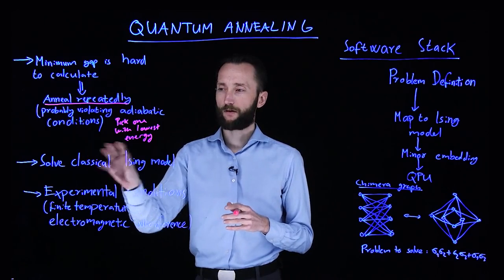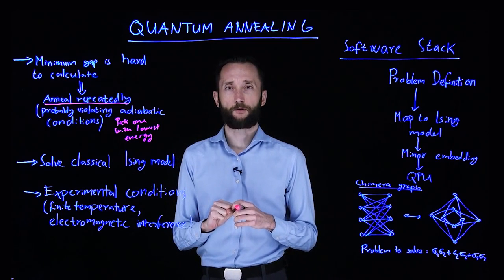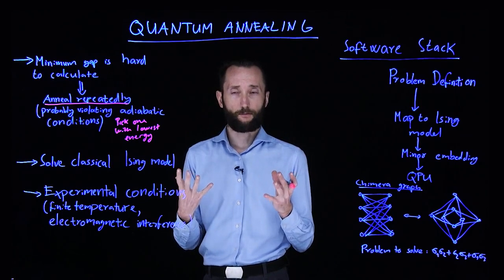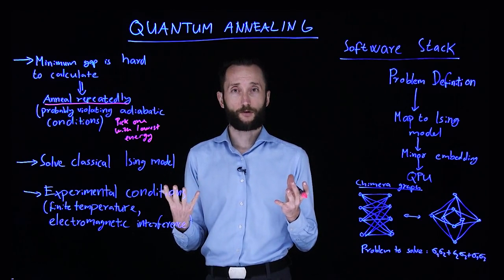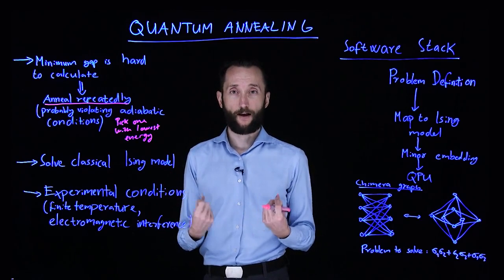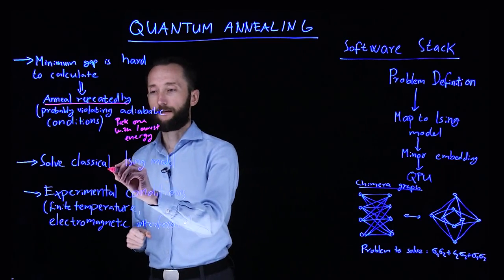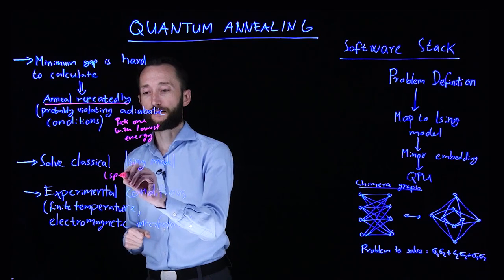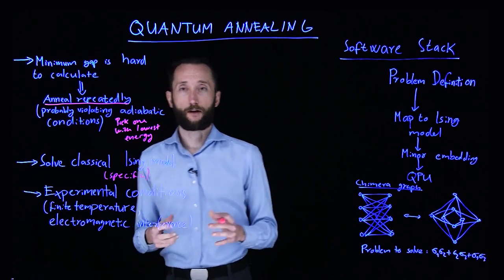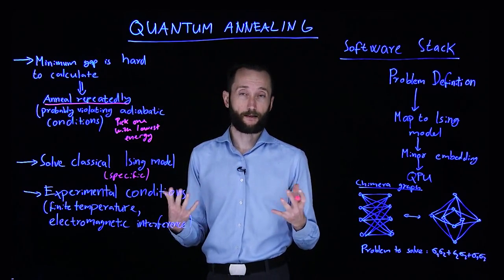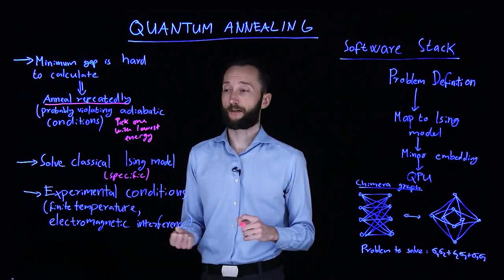So if you resort to just solving the classical Ising model, then you can solve these quadratic unconstrained binary optimization problems, QUBOs, which are NP-hard. So there's value in solving specific operations as opposed to solving a much harder problem that allows you to perform universal calculations.